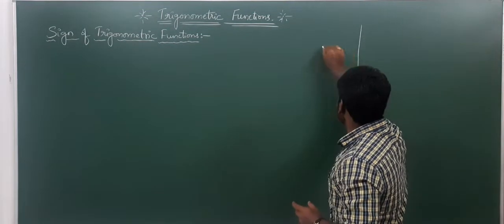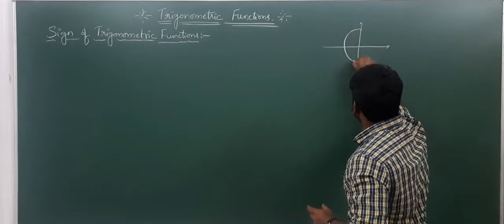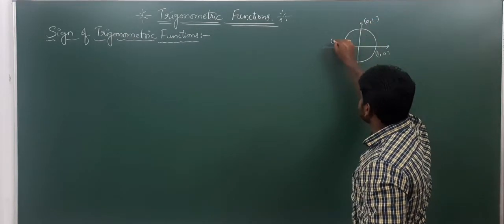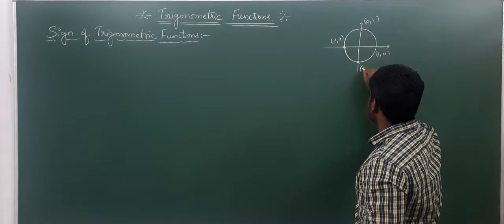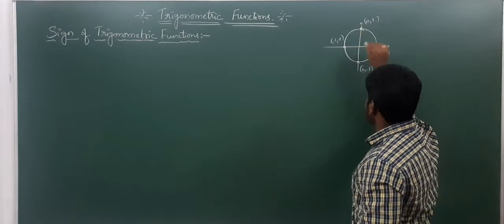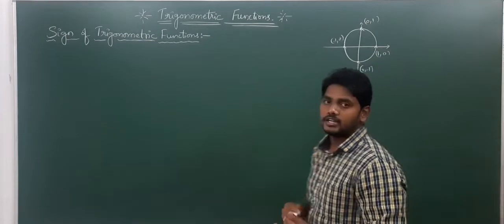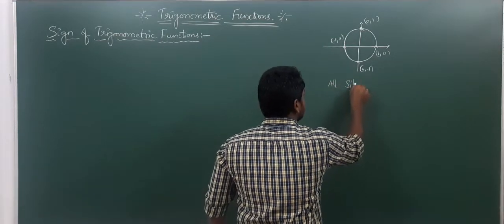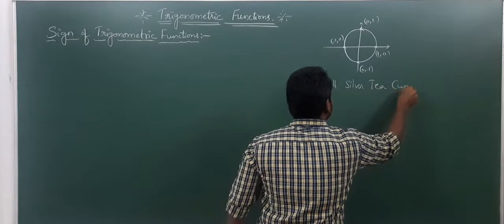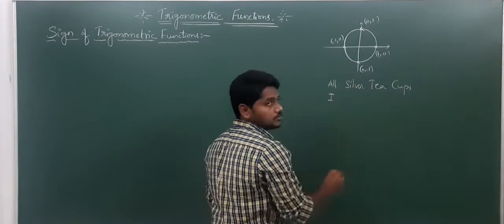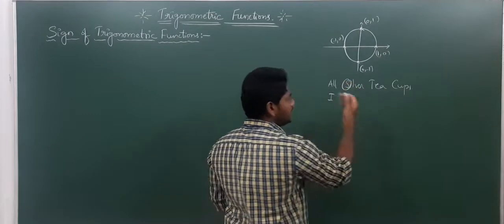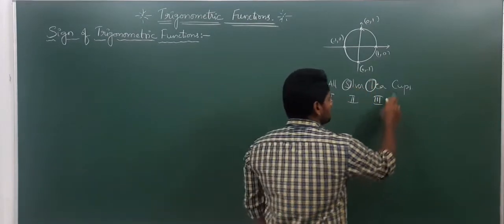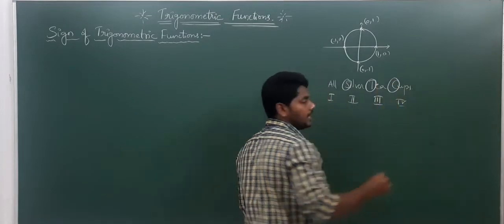In the previous class, according to the unit circle, these points become: one comma zero, zero comma one, minus one comma zero, and zero comma minus one. Based on this, we discussed in which quadrant which trigonometric functions are positive. For example, 'All Silver Tea Cups' — first quadrant all are positive, second quadrant sine and cosecant are positive, third quadrant tan and cot are positive, fourth quadrant cos and secant are positive.